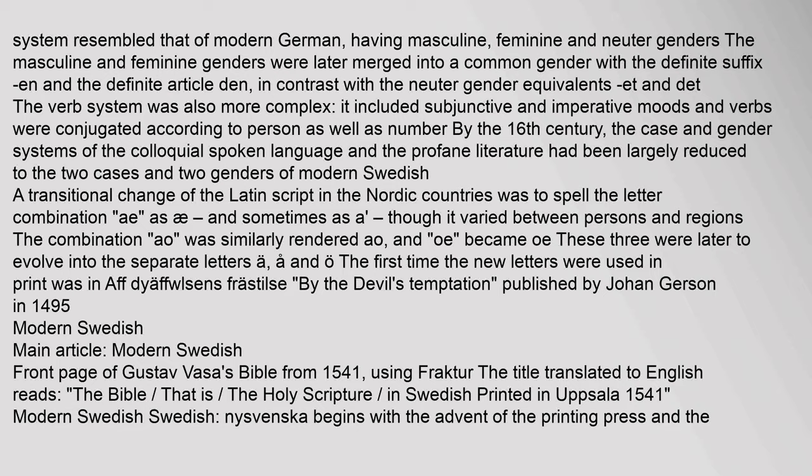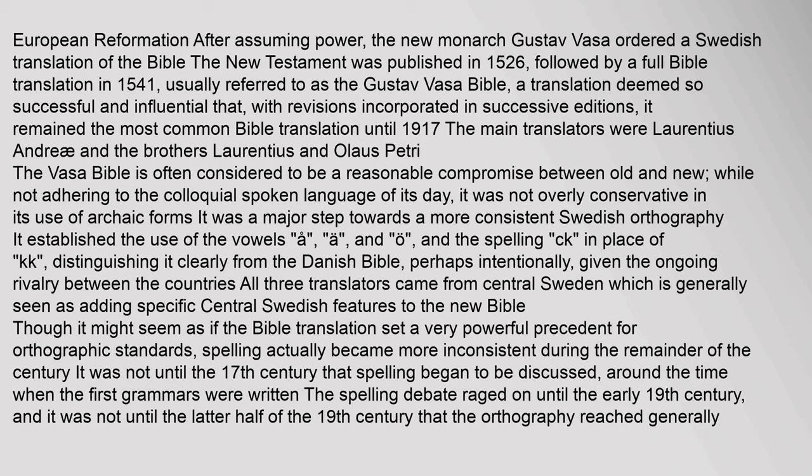After assuming power, the new monarch Gustav Vasa ordered a Swedish translation of the Bible. The New Testament was published in 1526, followed by a full Bible translation in 1541, usually referred to as the Gustav Vasa Bible — a translation deemed so successful and influential that, with revisions incorporated in successive editions, it remained the most common Bible translation until 1917. The main translators were Laurentius Andrea and the brothers Laurentius and Olus Petrie. The Vasa Bible is often considered to be a reasonable compromise between old and new. While not adhering to the colloquial spoken language of its day, it was not overly conservative in its use of archaic forms, and was a major step towards a more consistent Swedish orthography.